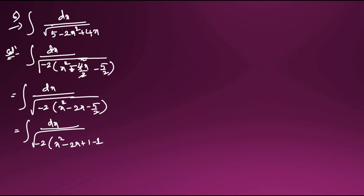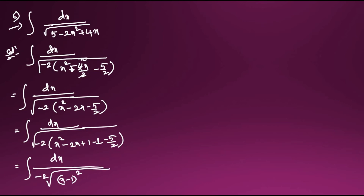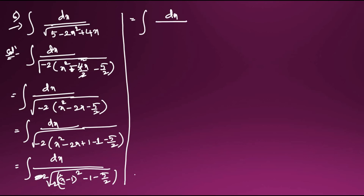So -2(x² - 2x + 1 - 1 - 5/2) = -2((x-1)² - 1 - 5/2) = -2((x-1)² - 7/2). This becomes integral dx/√(-2·((x-1)² - 7/2)). Multiplying out the negative: -2 × (-(7/2 - (x-1)²)) = 2(7/2 - (x-1)²).